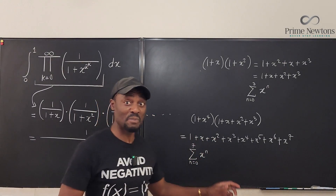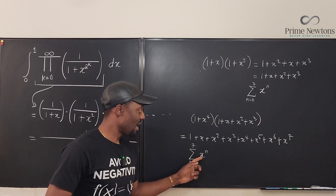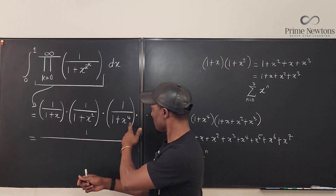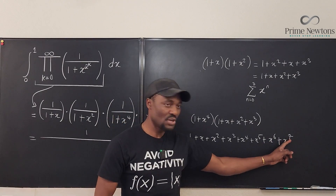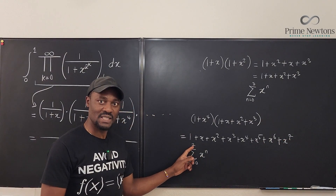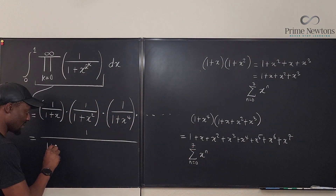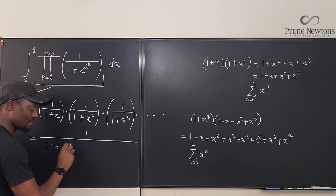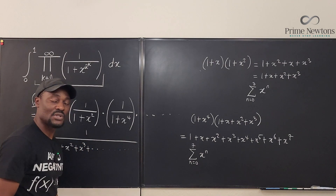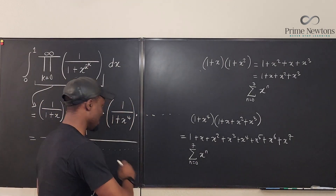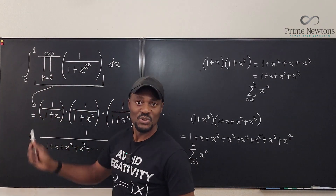By induction — remember this is competition math — as we keep going, this is the first factor, second, third... as we go to infinity, the upper power goes to infinity as well. So we might as well say this is 1 + x + x squared + x cubed + ... going on forever, an infinitely long sum.